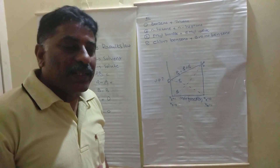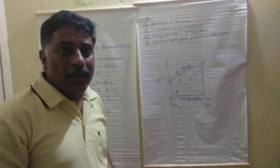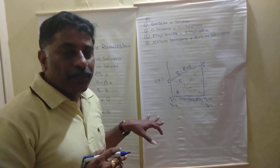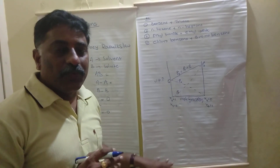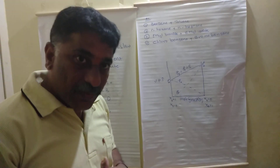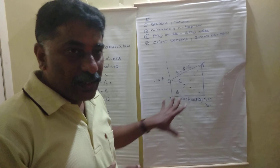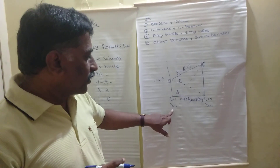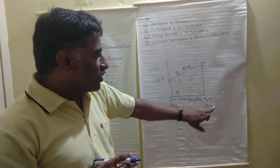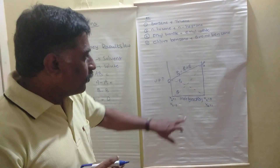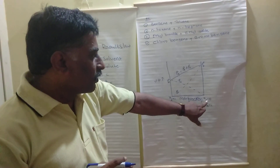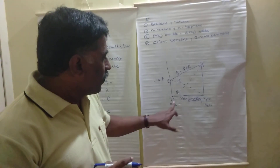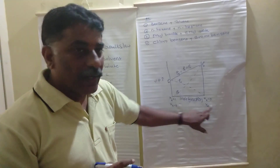If we want to represent the ideal solution in a graphical manner, we draw a graph between vapour pressure and mole fraction. Here, mole fraction of component A goes from 0 to 1, and correspondingly mole fraction of component B goes from 1 to 0. As mole fraction of component A increases, pressure increases proportionally.